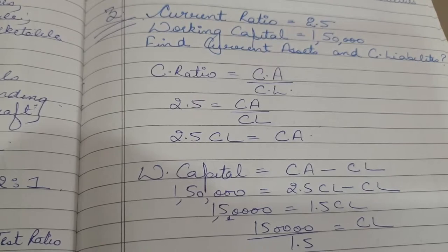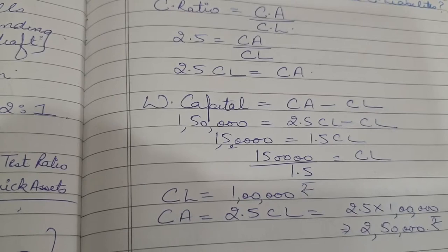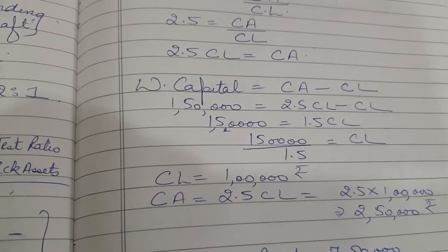Substituting CA = 2.5 CL into the working capital formula: 1,50,000 = 2.5 CL − CL. We get CL = Rs. 1,00,000. Now finding current assets: CA = 2.5 × 1,00,000 = Rs. 2,50,000.